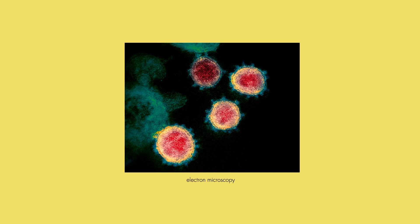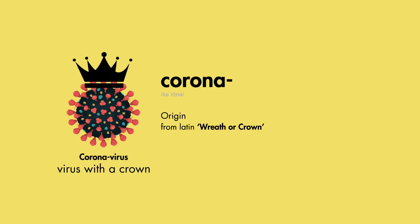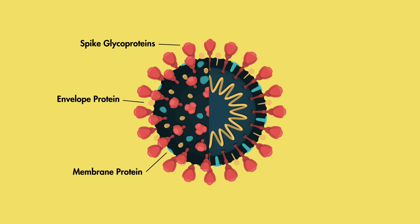Coronaviruses are named for the crown-like or halo-like spikes on their surface — hence the name corona, which has its origin in Latin to mean wreath or crown. These viruses are spherical or round in shape, with an envelope composed of a lipid membrane that is coated by spike glycoproteins, envelope and membrane proteins, encapsulating its genetic material inside.